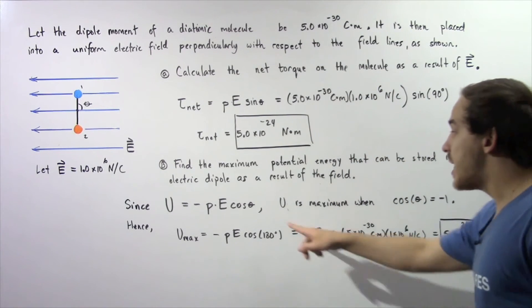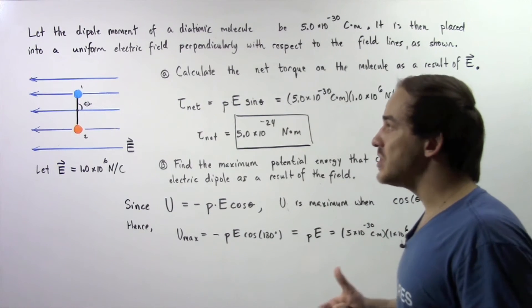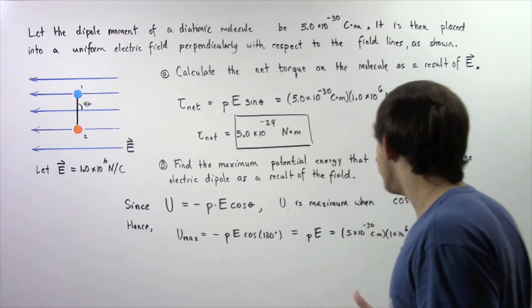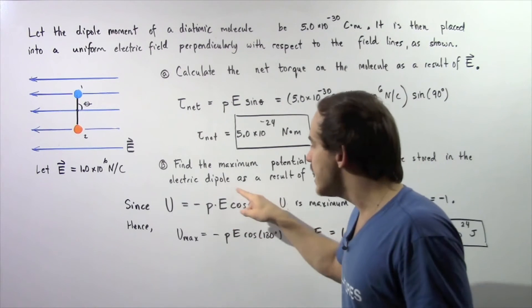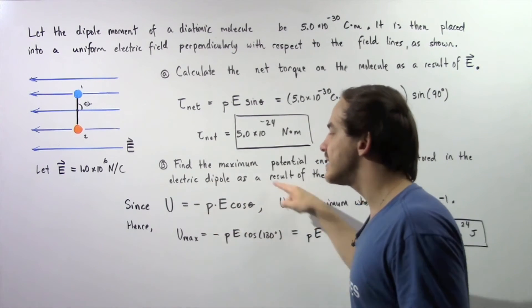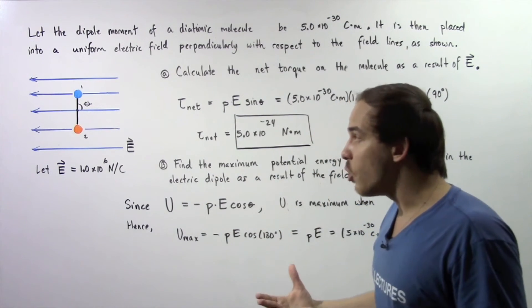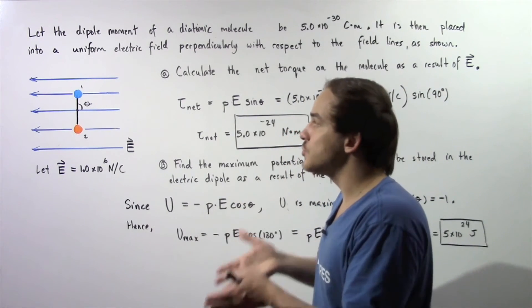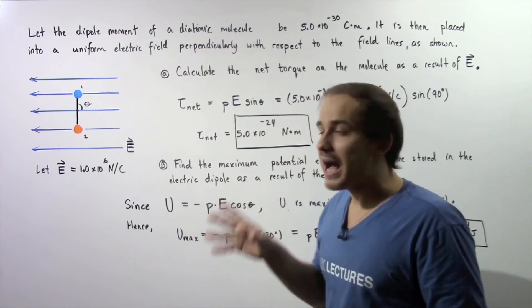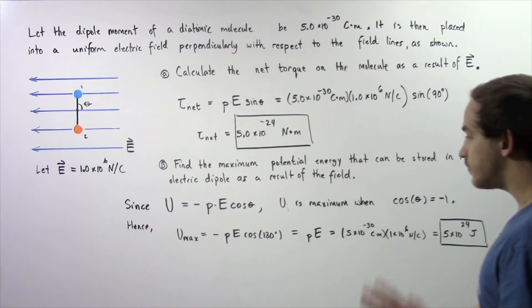Now we also said that our potential energy is maximum when our cosine of the angle theta is equal to negative 1 because when this is equal to negative 1, this will be a positive value. At that moment, all that work has gone into potential energy of our dipole molecule.